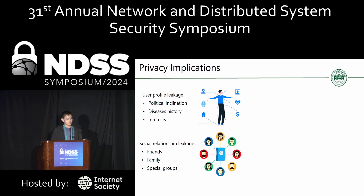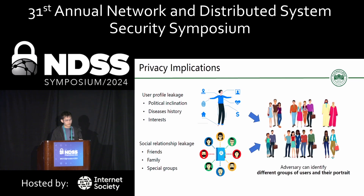Within these three privacy leakage patterns, we examine which aspects of user privacy data are impacted. First, there is the user profile — through extensive monitoring of shared content over time, an adversary can predict information such as medical history and political inclinations. Second, the adversary can acquire social relationships and learn about users' friends and connections. Combining both types of information, the adversary can ultimately identify different groups of users and build their portrait. For example, if a user frequently shares medication content, the adversary can categorize them into a group with a particular type of illness.